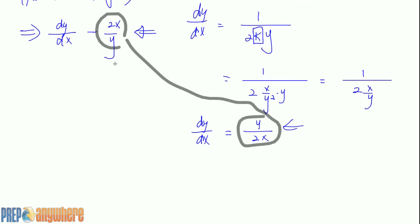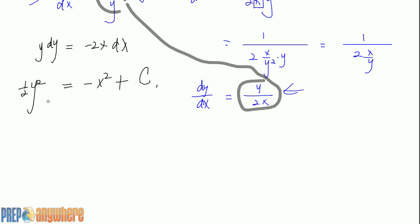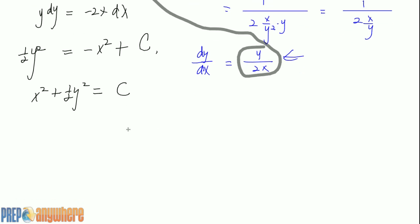Now let's find what this equation is by solving the differential equation. This is a first order differential equation. So you get y dy equals minus 2x dx. Integrating: half y squared equals minus x squared plus some constant. Bringing x squared to the left side, we get x squared plus half y squared equals some constant.